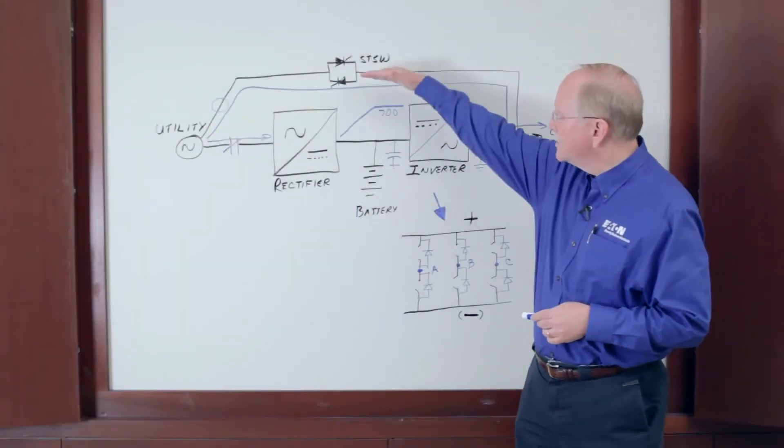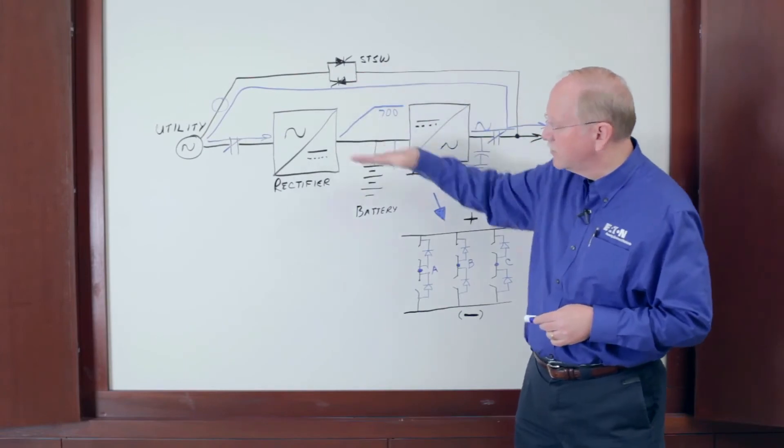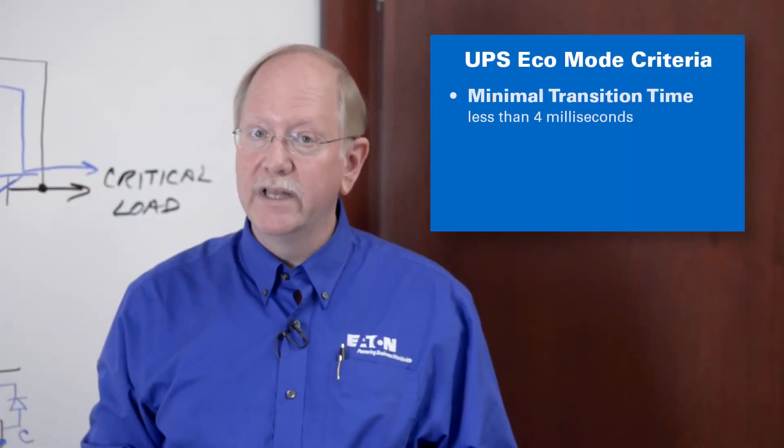So if you're considering using Eco mode on your UPS, there's three criteria that should be important. The first one is transition time. The time it takes from static switch operation to traditional double conversion should be less than four milliseconds, ideally less than two milliseconds or two one thousandths of a second.